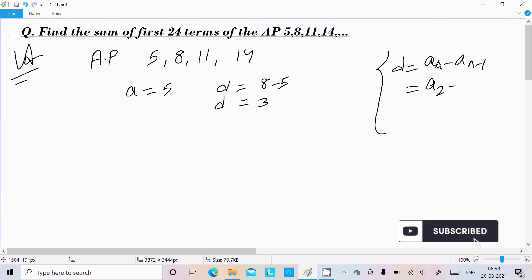...then n equals 2 and a_(2-1) equals a_1. So the second term minus the first term: a_2 minus a_1 equals 8 minus 5, which is 3. Now the sum of n terms formula is S_n equals...